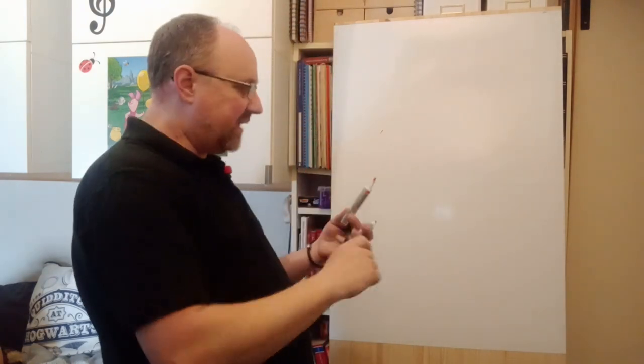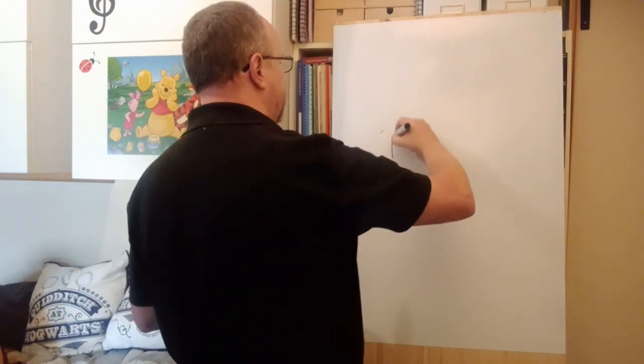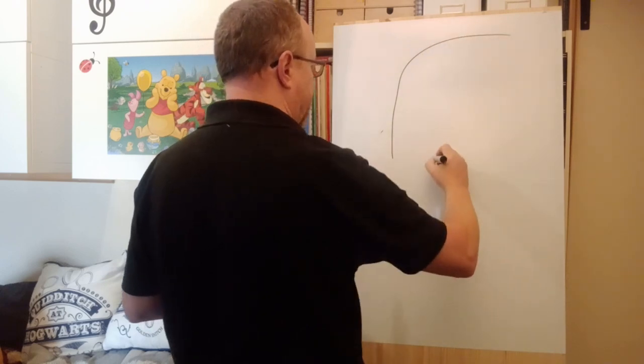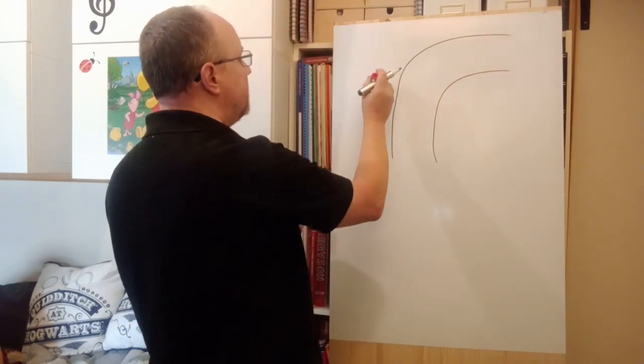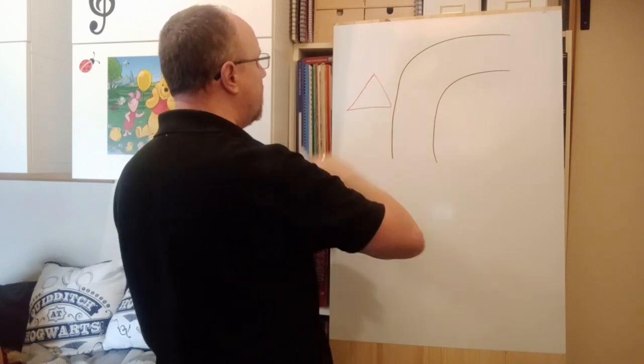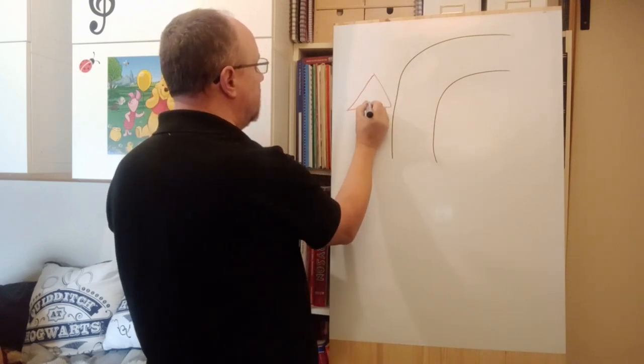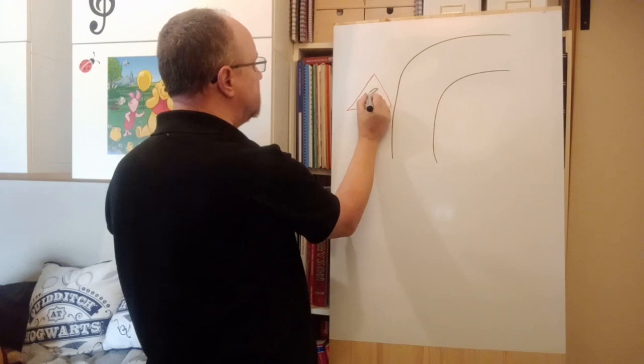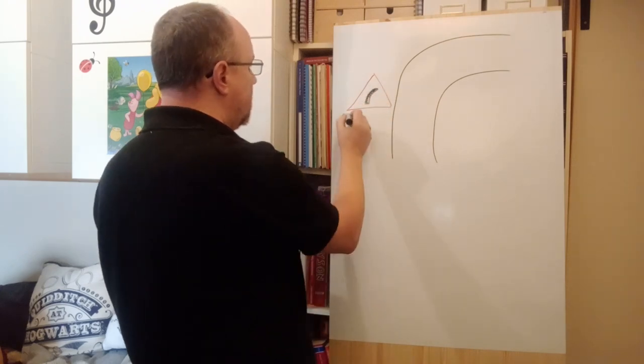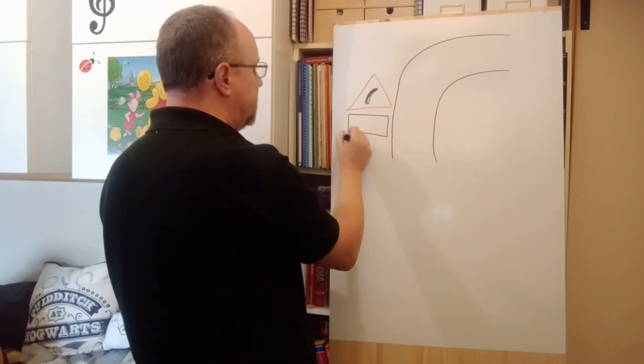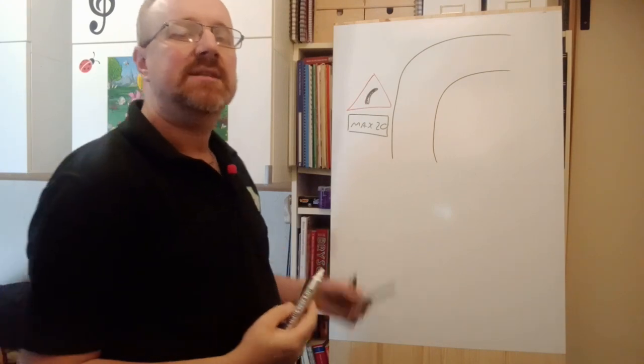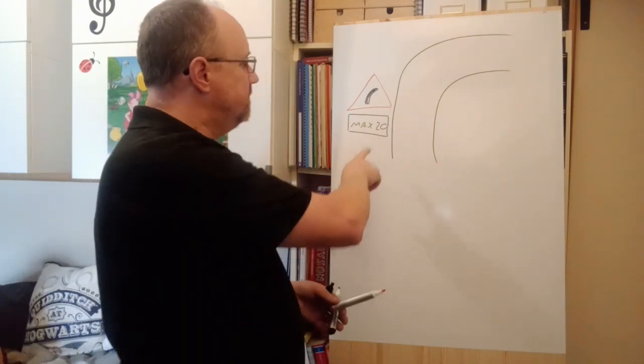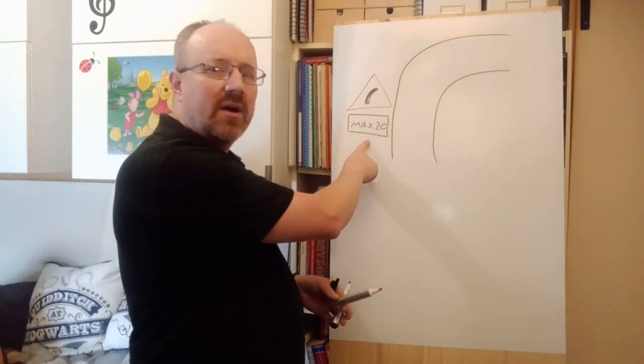We have a road with a bend in it, and we've been given a warning sign to tell us of the bend to the right. Again underneath it, let's say maximum speed 20. It's advisory.